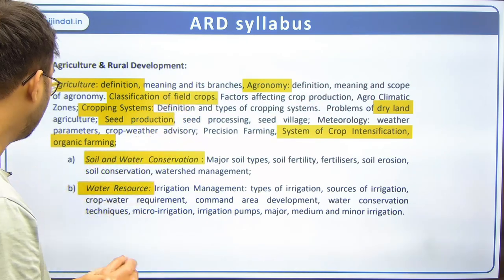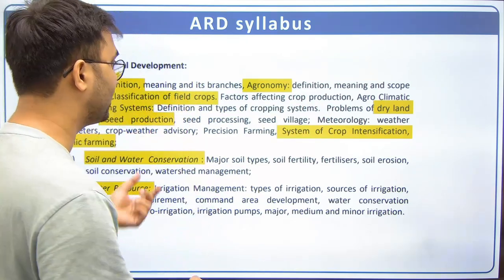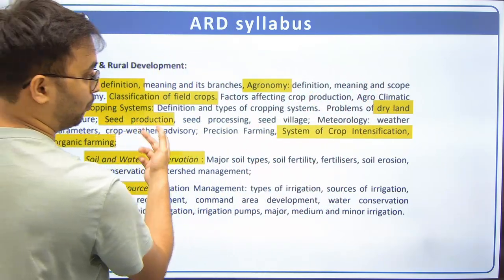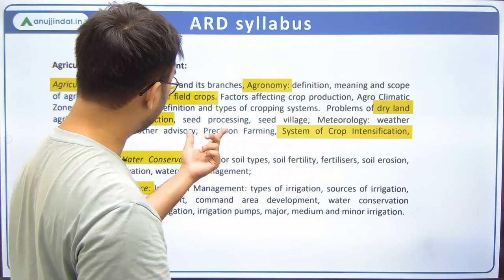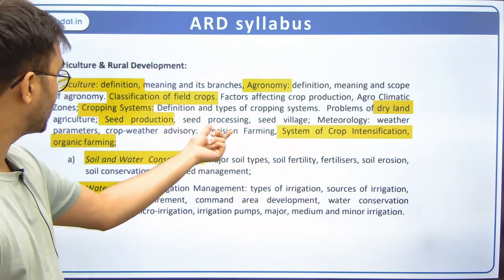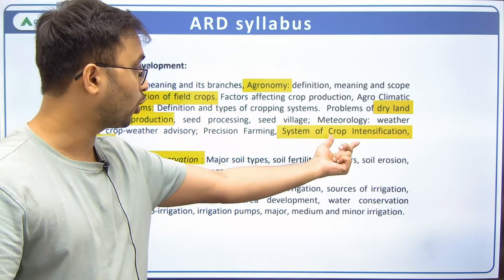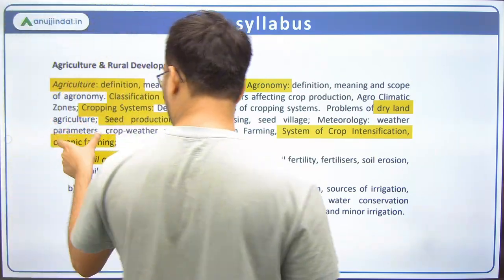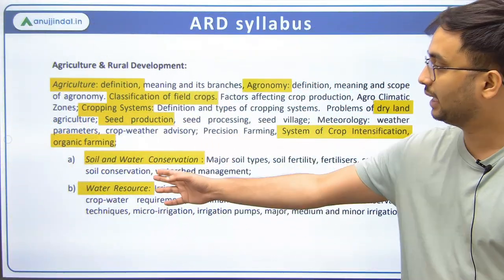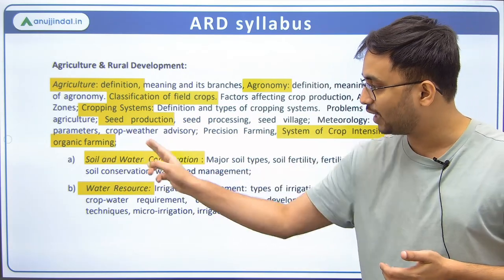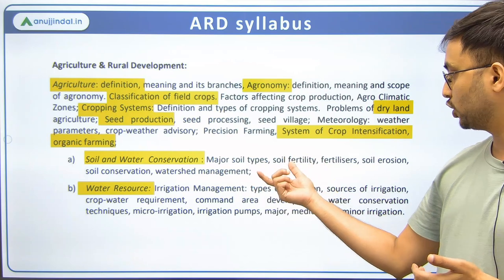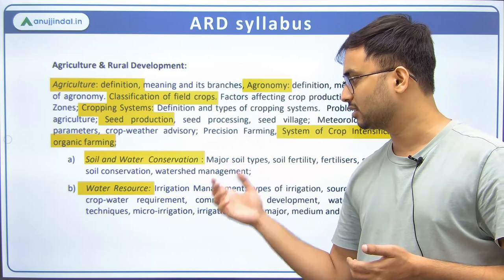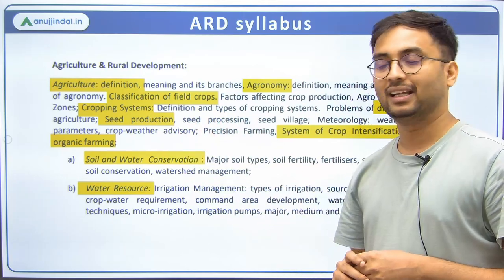Other topics are related to farming systems such as precision farming, organic farming, system of cropping, and crop intensification. Then comes soil and water conservation — a holistic topic containing classification, fertility, fertilizers, soil erosion, and conservation practices. Then water resources, irrigation and water management come next.